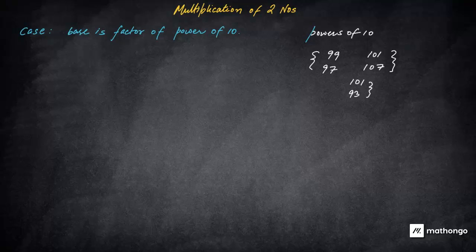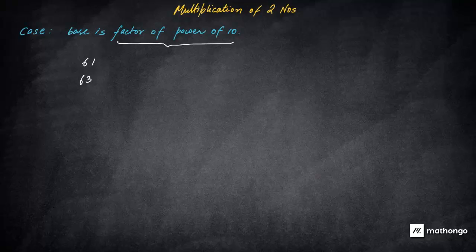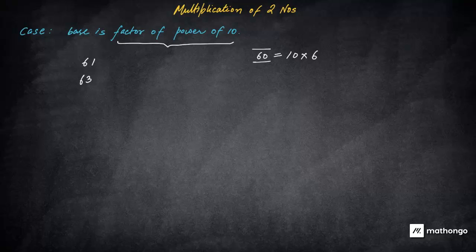Now what happens when you don't have numbers which are basically close to powers of 10? For example, we take a question which is somewhat like 61 into 63. These numbers are not close to powers of 10 - power of 10 is 10 or 100 or 1000 or 10,000. But we can say that these are close to factor of power of 10. So what is the power of 10 which could be utilized here? So that should be 10. We know that both of them are closer to 60. 60 is 10 into 6.